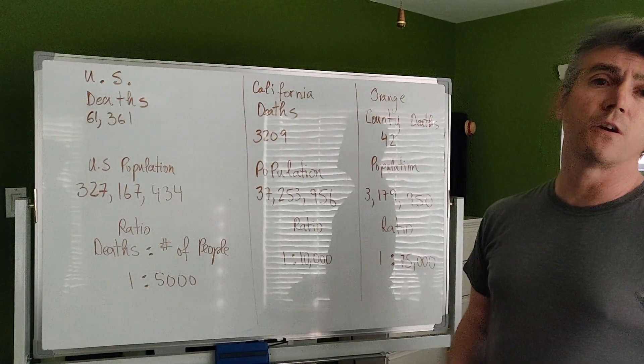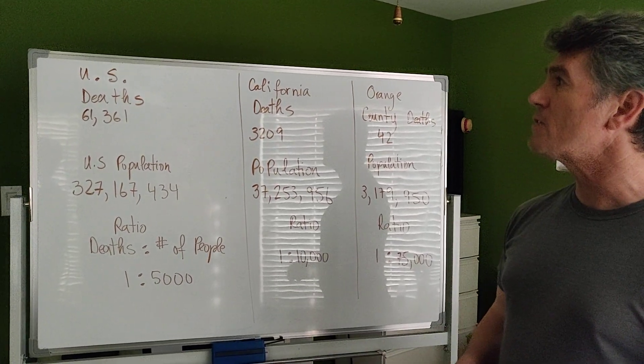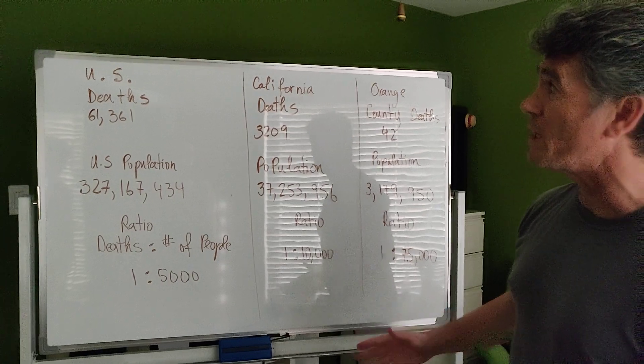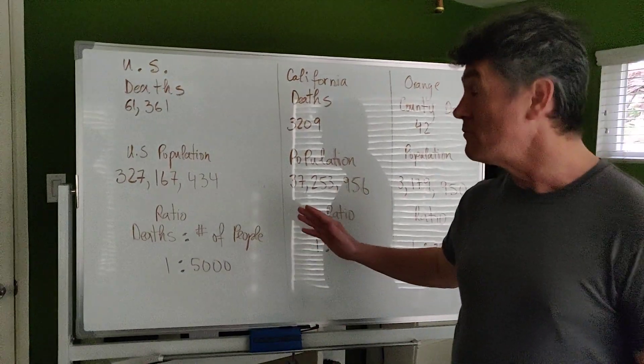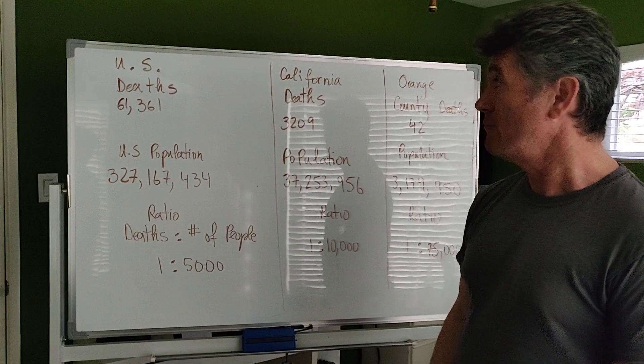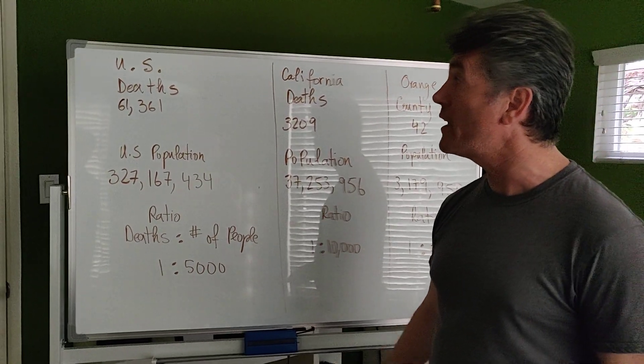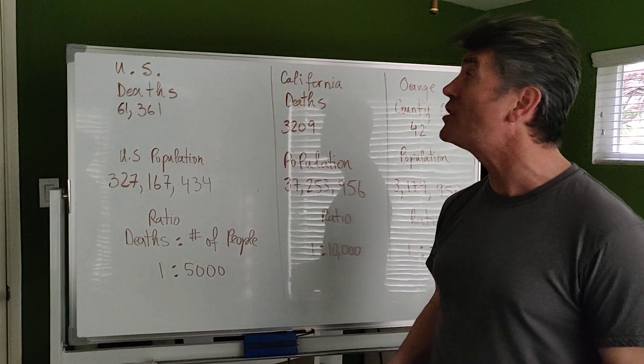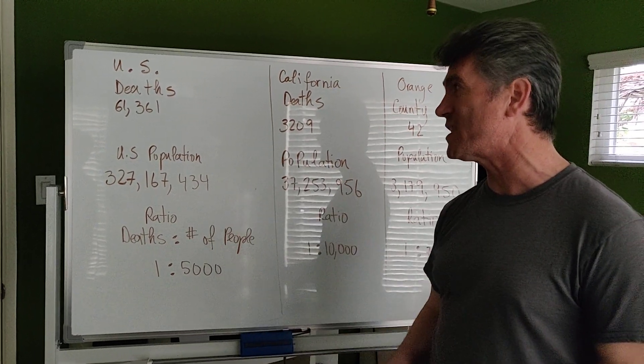I want to start the video with some good news. Well, it's not really good news, but the number of deaths today, supposedly, the data taken off the internet, is 61,361 in the United States.